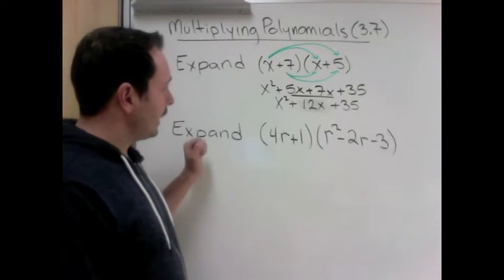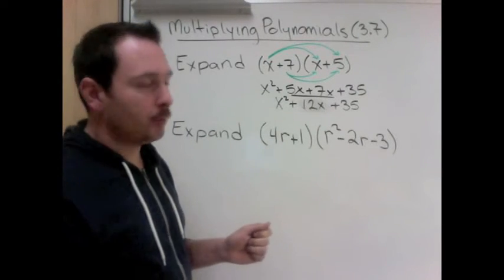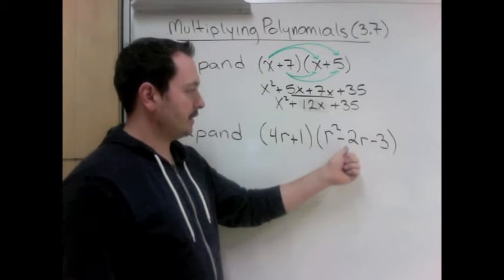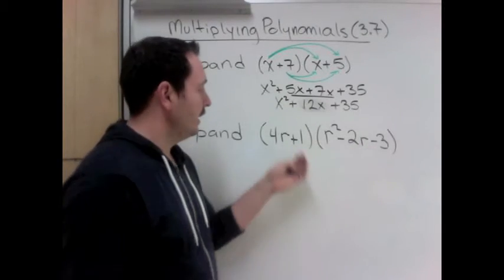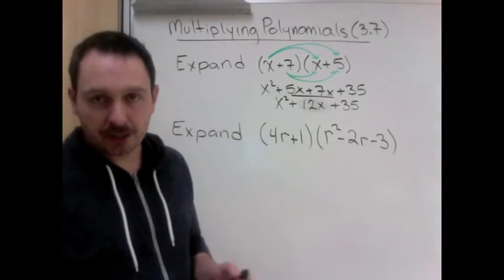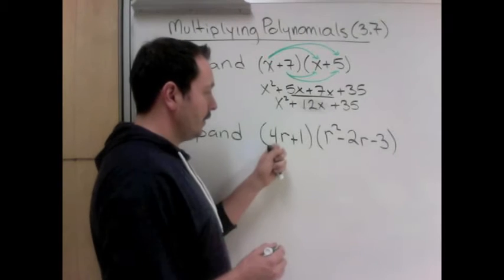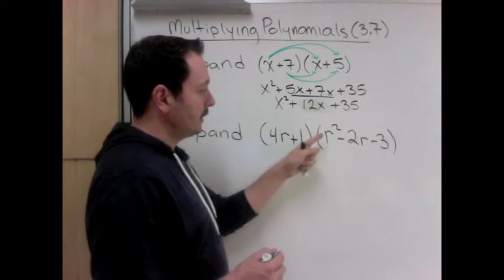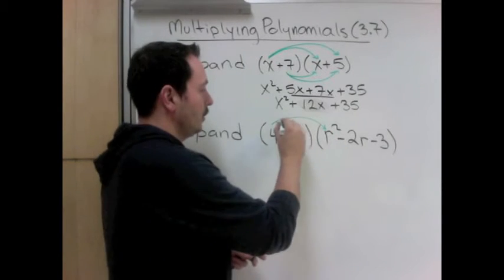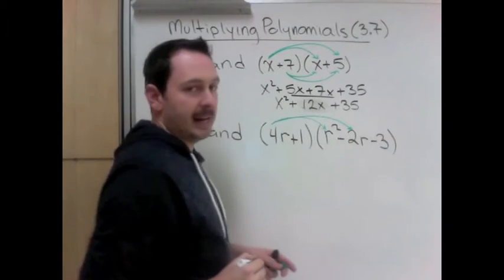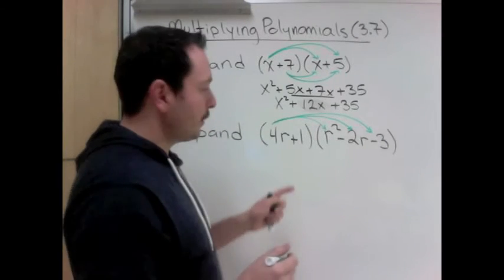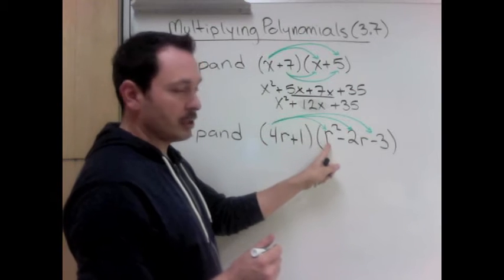So now let's look at it when it's not a binomial because we can't do FOIL. FOIL has first times first, outside times outside, inside times inside - well what's the inside now? Last times last - there's going to be parts missing. The distributive property makes sure that we get the first one times each piece. So 4r needs to multiply r squared, 4r needs to multiply negative 2r, 4r needs to multiply negative 3. So dealing with those parts first, 4r times r squared.